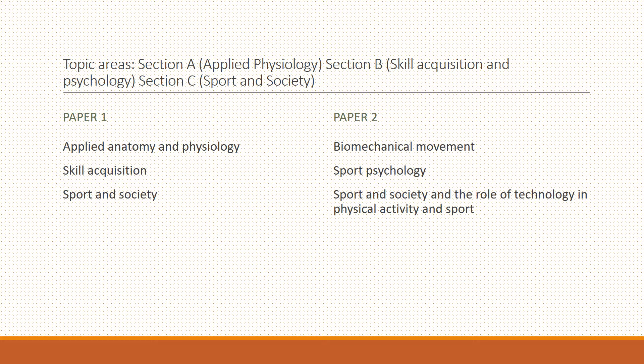As you study during A-Level PE there are three distinct areas: Section A, B, and C. Section A is Applied Physiology, Section B is Skill Acquisition and Psychology, and Section C is Sport and Society. Within those topic areas we have different sections for each, and you can see on the slide the sections that are Paper 1 and Paper 2.